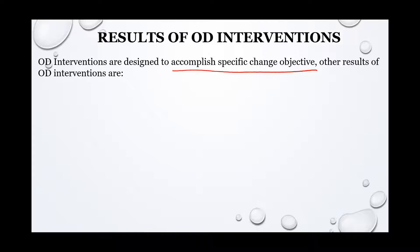Apart from this, are there any other results that OD intervention gives? The first one is a greater degree of transparency. Whenever an organization starts OD interventions and people start involving themselves in interventional activities, automatically transparency increases — there will be no major hide-and-seek business. The organization becomes more transparent in the flow of information and communication. This is one result you can expect when OD intervention is brought into picture.